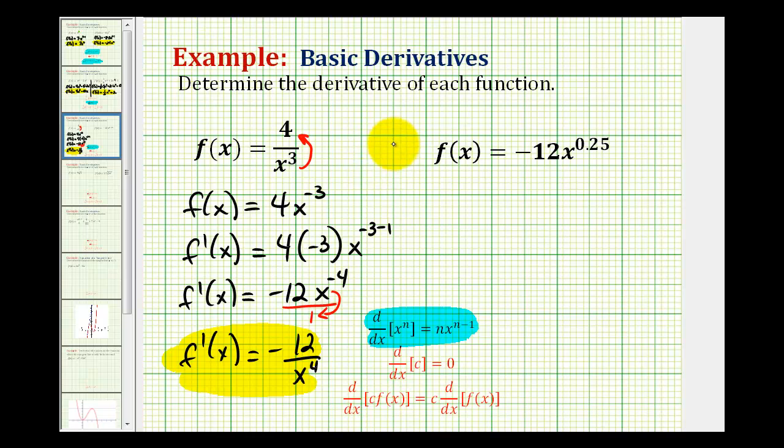And sometimes we're given an exponent that's in decimal form but that doesn't change how we apply the power rule. So we have f prime of x is going to be equal to negative 12 times the derivative of x to the power of 0.25. So we'll multiply by the exponent and then we'll subtract one to get the new exponent.